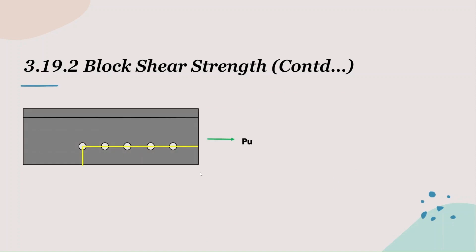Using the same angle section, we have realized that the tension plane is the weaker plane and the shear plane is the stronger plane. Assuming their shear and tensile strengths with random numbers: the shear strength is assumed at 200 kips and tensile strength at 100 kips. Tensile strength is much lower because the tension plane is the weaker plane. Now imagine a tensile force Pu acting on the angle section — it starts from zero and we will gradually increase the force.